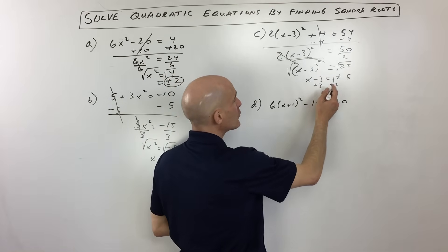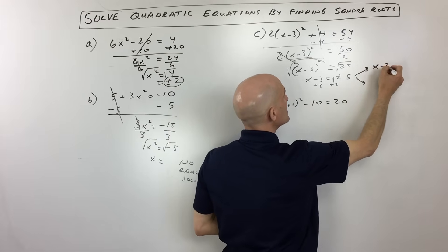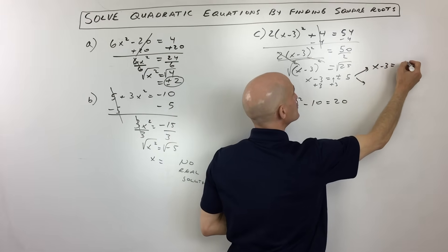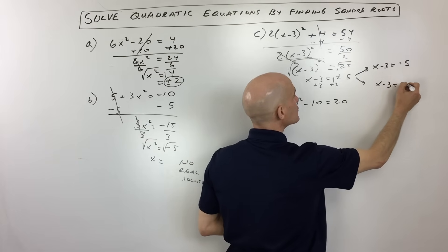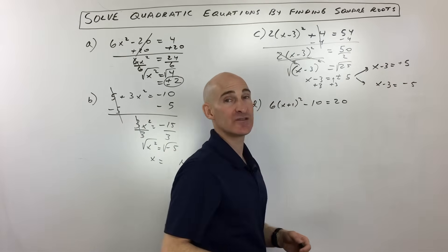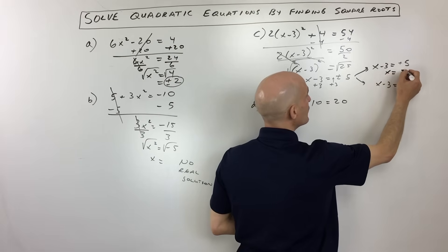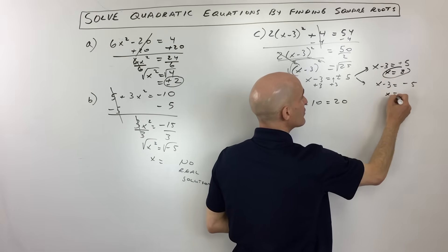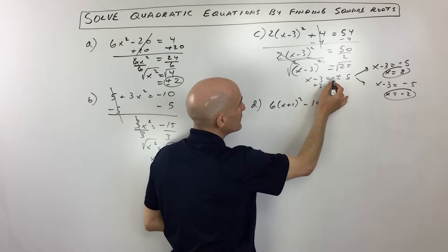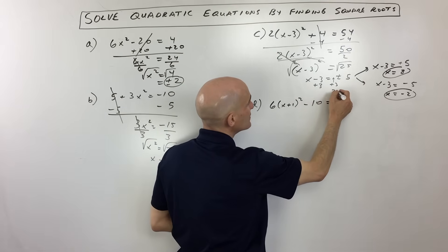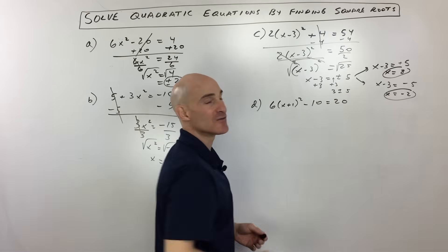Another way to do this problem — a lot of students do it this way and it's a good technique: split it up into two equations. x minus 3 equals positive 5, and x minus 3 equals negative 5. Then solve those individually. Add 3 to the first — that gives you 8. Add 3 to the second — that gives you negative 2. Or if you prefer the other method, put that plus 3 in front: 3 plus or minus 5. 3 plus 5 is 8, and 3 minus 5 is negative 2.